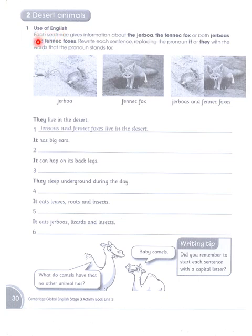First of all we will see the use of English. Each sentence gives information about the Jarboa and the Fennec Fox, or both Jarboas and Fennec Foxes. Rewrite each sentence replacing the pronoun 'it' or 'they' with the words that the pronouns stand for. You know what a noun is and what a pronoun is. Pronouns are words like it, she, he, they. If you talk about a Jarboa and then mention it again, instead of repeating 'Jarboa' you say 'it.' So the noun is replaced by the pronoun.